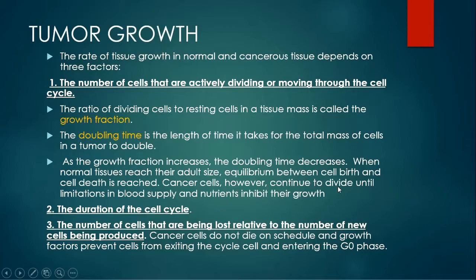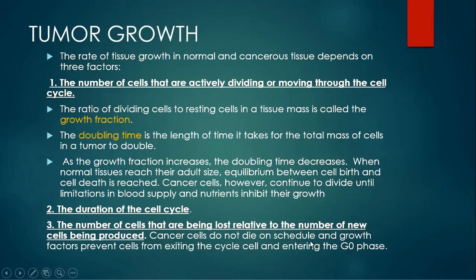As growth fraction increases — meaning there are more dividing cells than resting cells — doubling time will decrease, because more dividing cells create a mass faster. Normal tissues reach adult size and an equilibrium between cell birth and cell death, but this does not happen in cancer cells. Cancer cells continue to divide until limitations in blood supply and nutrients inhibit their growth. Additionally, cancer cells do not die on schedule; growth factors prevent cells from exiting the cell cycle and entering the G0 phase.